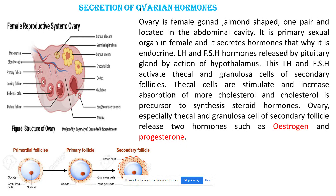The luteinizing hormone (LH) and follicle-stimulating hormone (FSH) are released by the pituitary gland under the action of the hypothalamus. Due to hypothalamic stimulation, the pituitary gland releases these two hormones — LH and FSH — which then activate the thecal cells and granulosa cells.